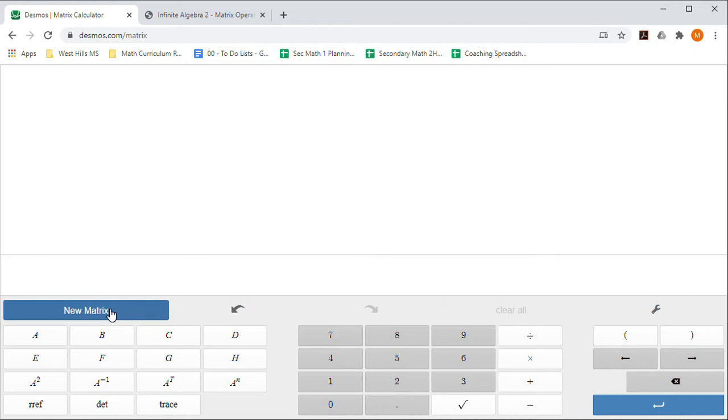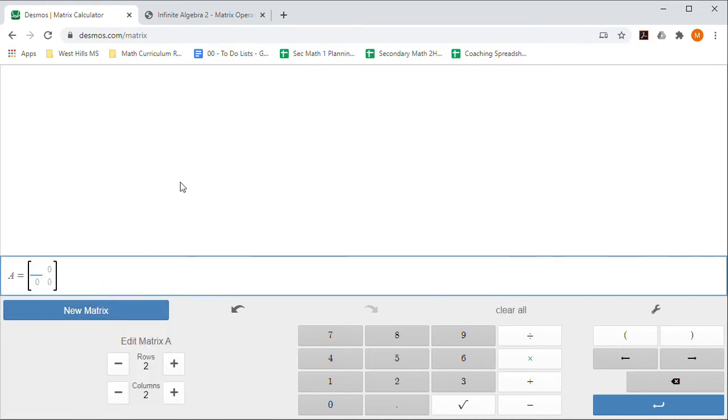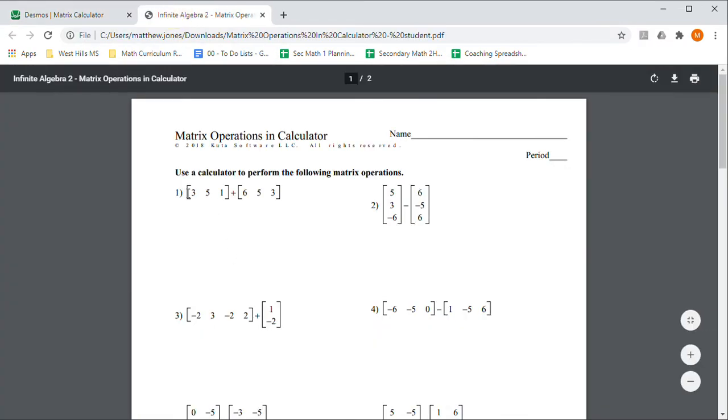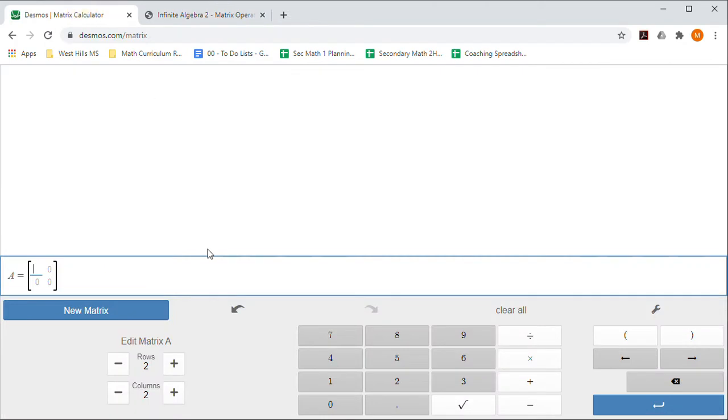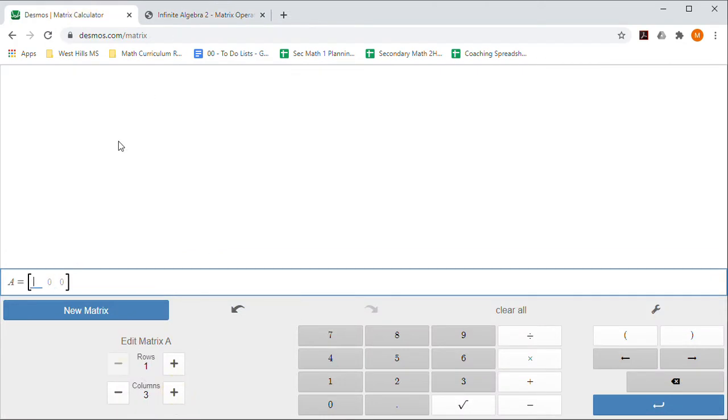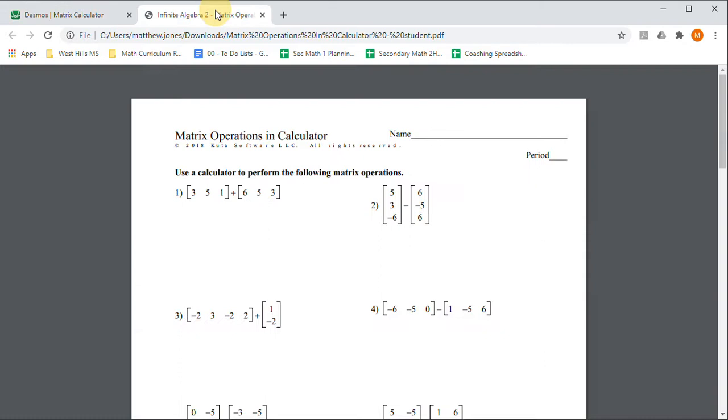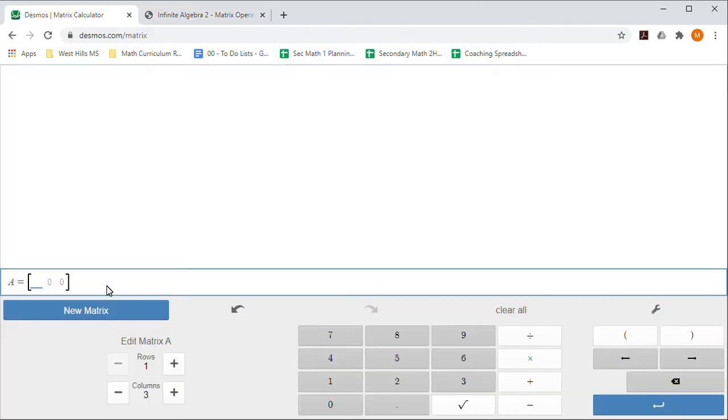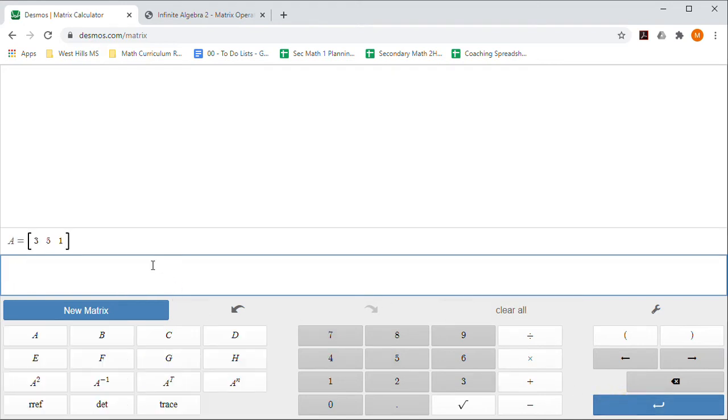To enter in a matrix you start by pushing new matrix and it starts with A equals, so A is going to be our first matrix. This matrix is one row and three columns, so I'm going to change my dimensions to be one row and three columns. Now it matches the same size of what's on paper here—it's going to be 3, 5, 1. So I'm going to put in 3, 5, 1, and to jump between those I just push tab or you can click on them individually. Once they're in there go ahead and push enter and it saves it in your calculator.